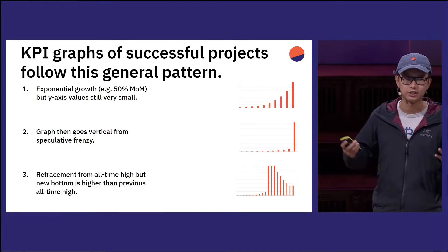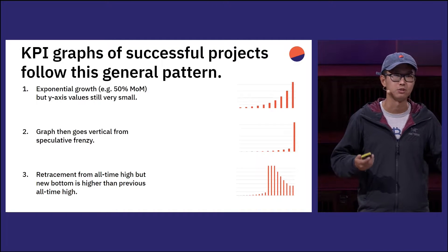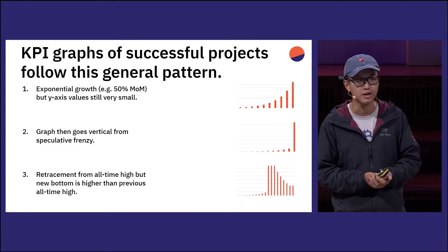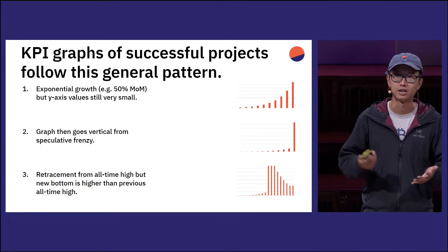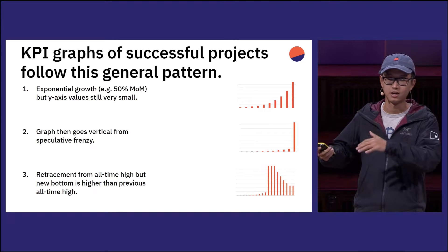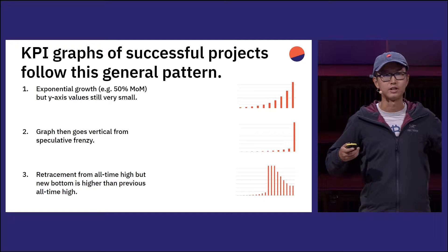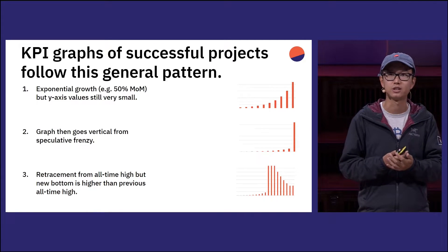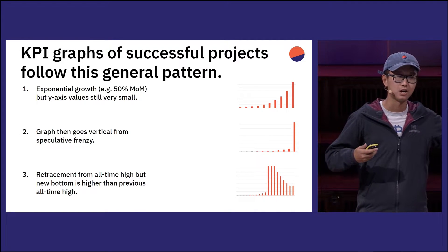Then there's usually some catalyst that causes that space in crypto to go exponential and vertical, and then the graph just goes crazy. And then after the speculative frenzy, you get a retracement from all-time high back to a new bottom. But the new bottom is higher than where it started out from. And eventually you have multiple of these boom-bust cycles, and each floor is higher than the previous floor.